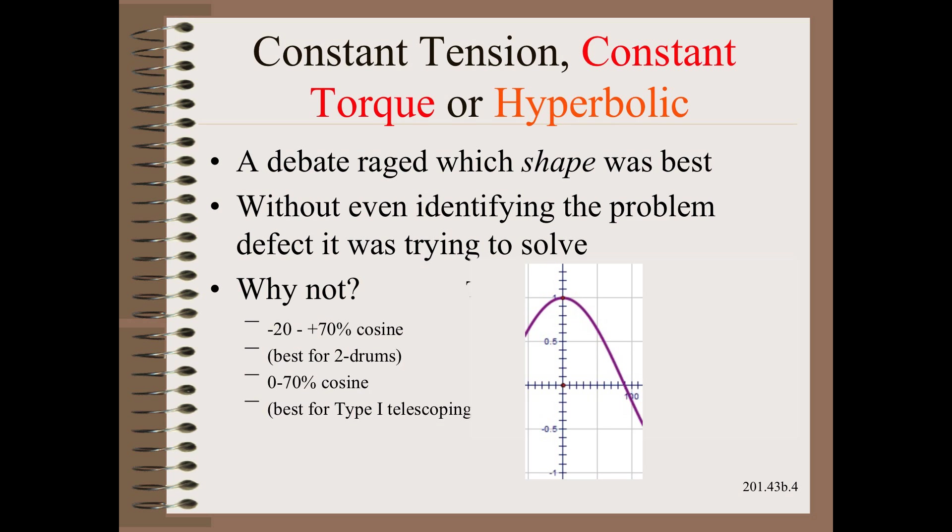Why not a zero to 70 degree portion of a cosine curve? That, in fact, is close to the near optimum shape for a type one telescope. Come to my winding class and find out why.